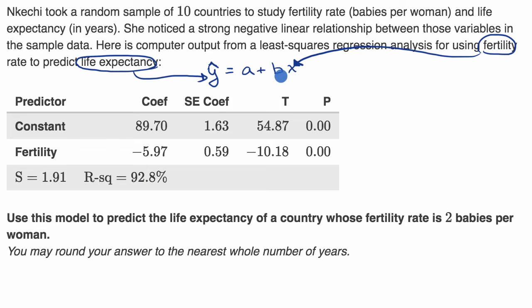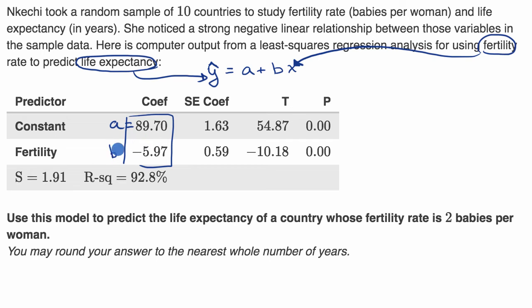Now what are a and b? Our computer output gives us that. The constant coefficient is a, and our slope is going to be negative 5.97 — you can view it as the coefficient on fertility.